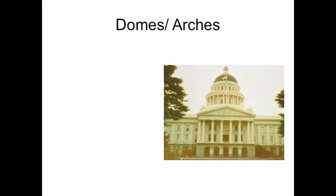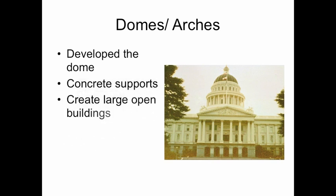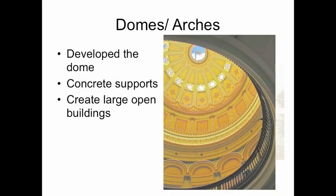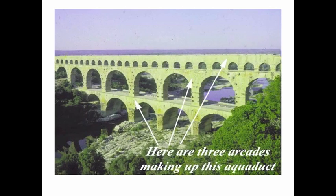This is an example of Roman influence. Here's the capital of California in Sacramento, and we're looking at concrete columns and domes. The Romans learned to use arches and domes from other cultures, and in the process they used it all over their empire, spreading it from one end to the other. This bridge-like structure is called an arcade — a series of arches on top of arches on top of arches.